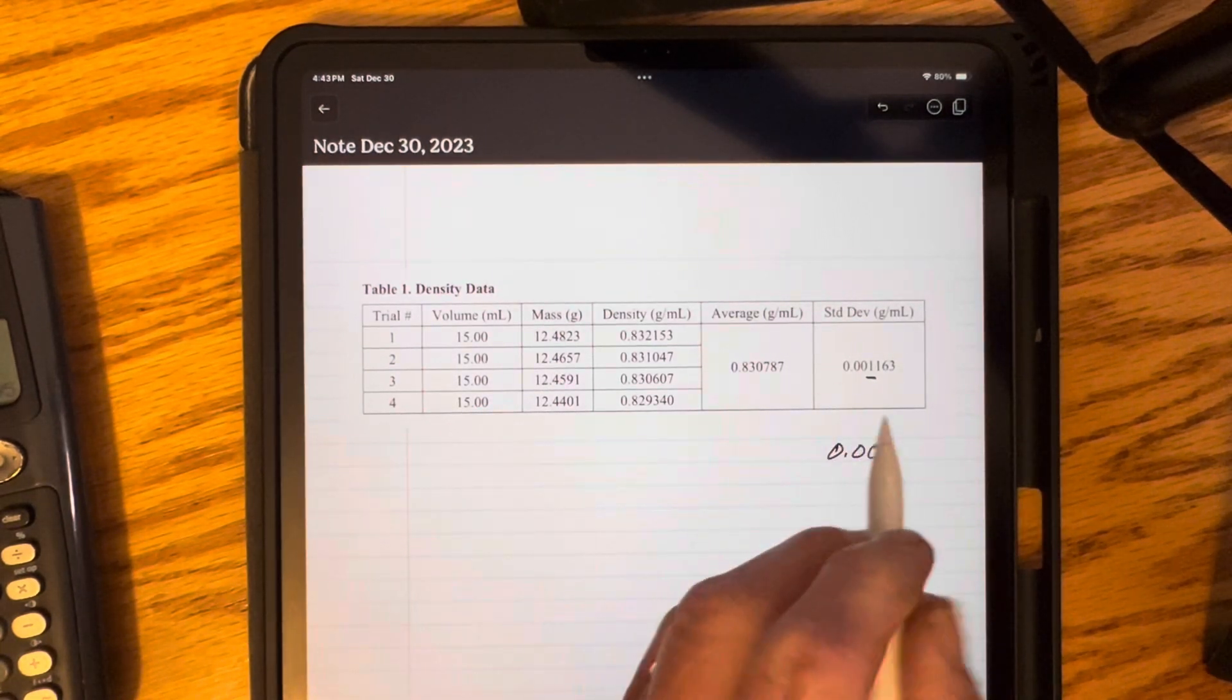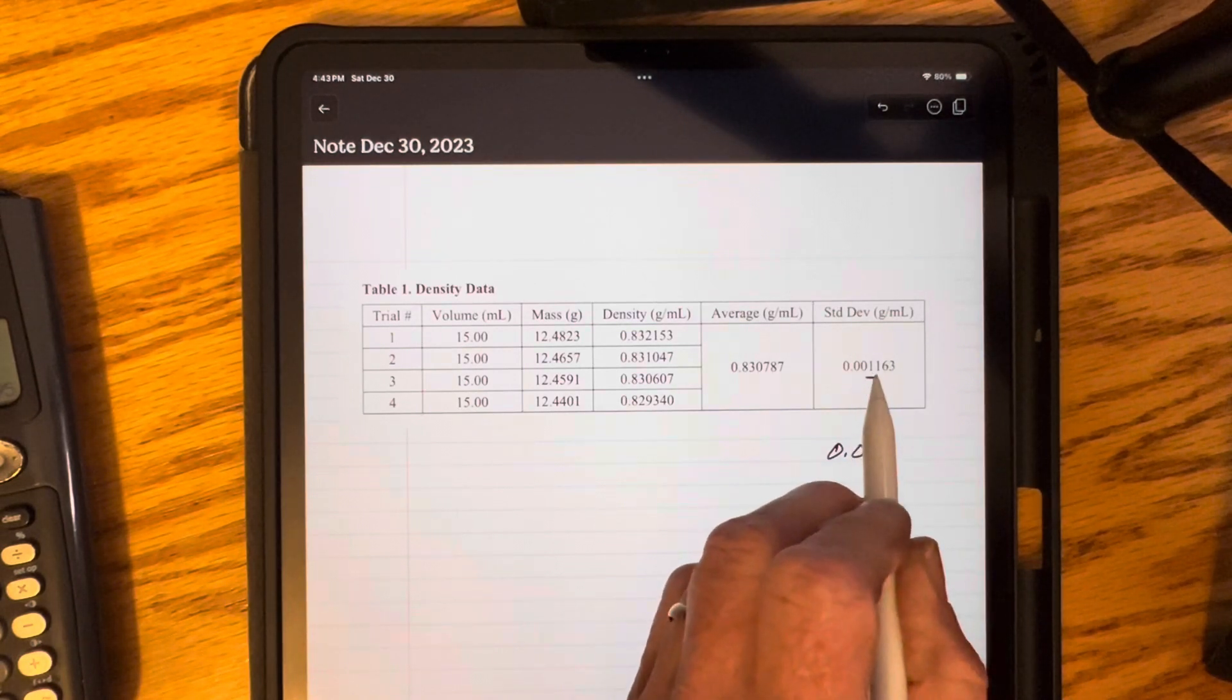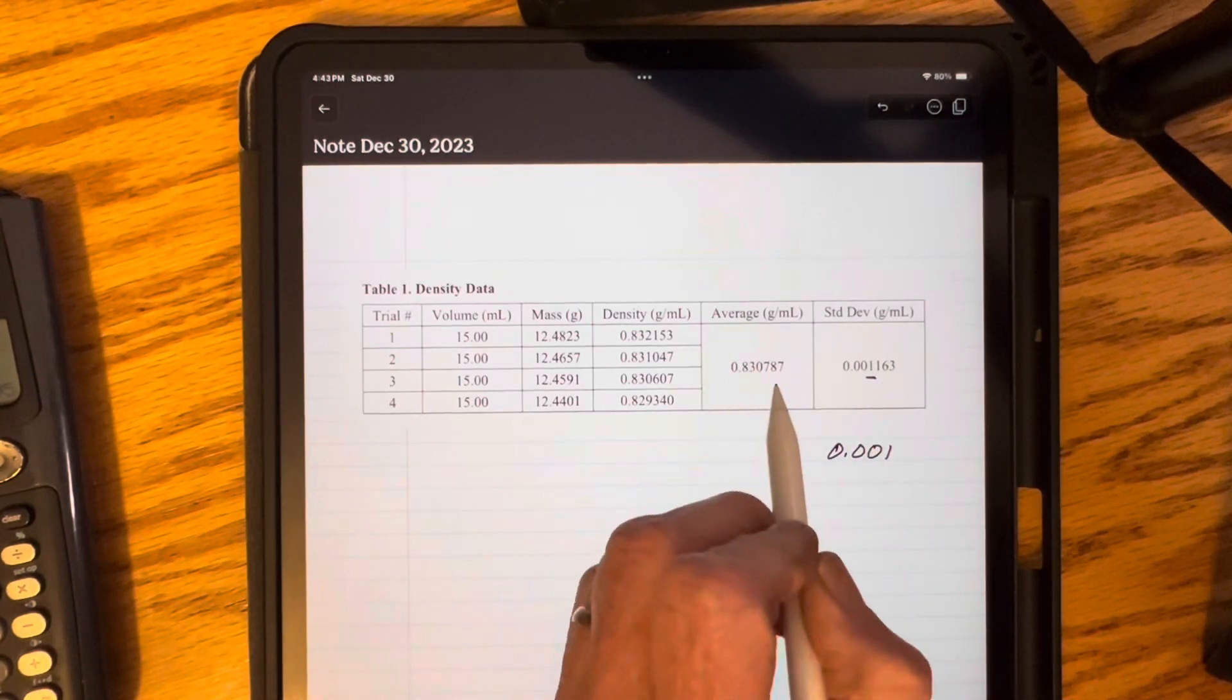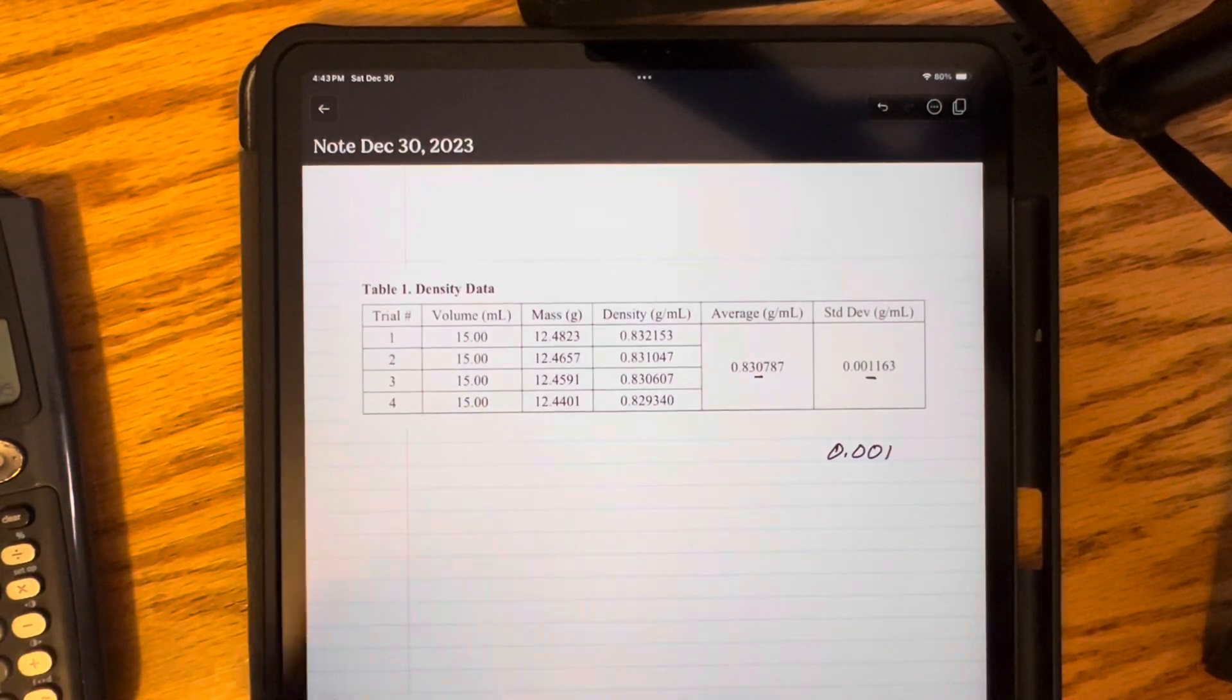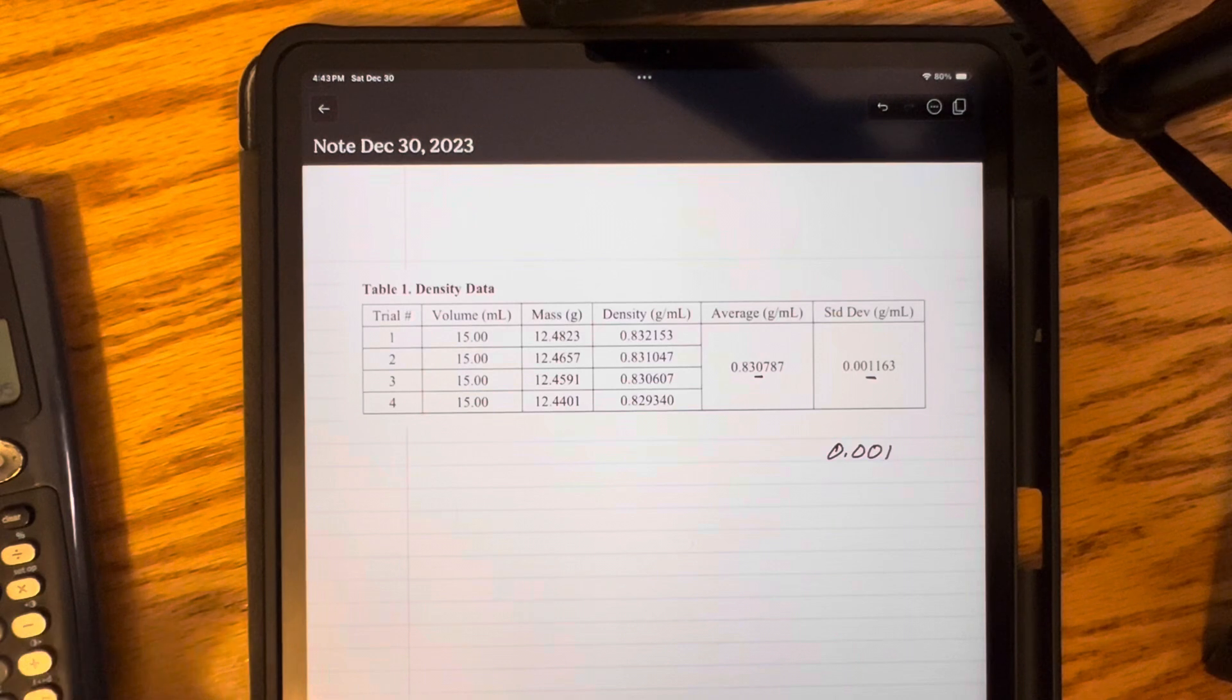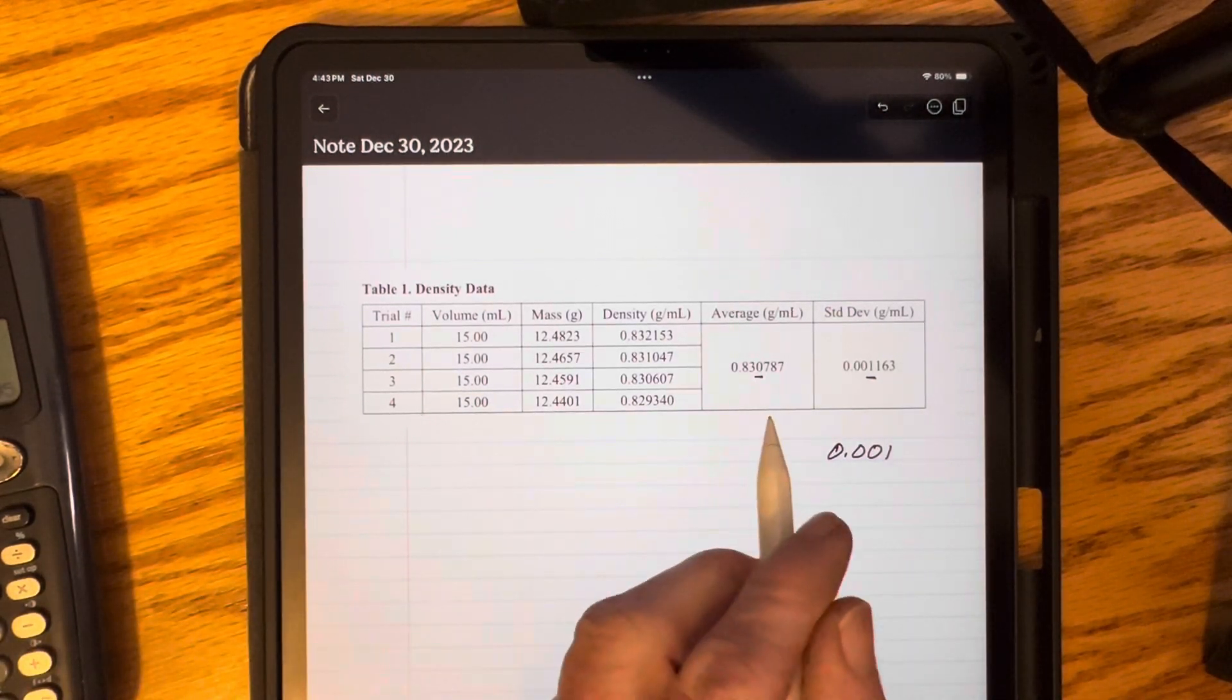That means that there's variation in this third decimal place. So in our average, the third decimal place has some variation in it. That makes it the uncertain digit. We don't want to keep more than one uncertain digit.